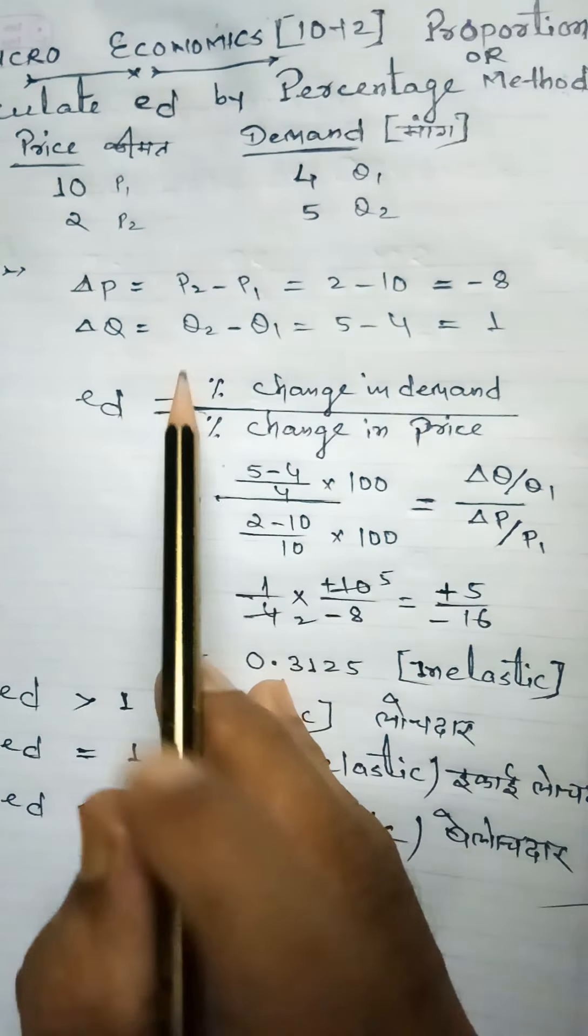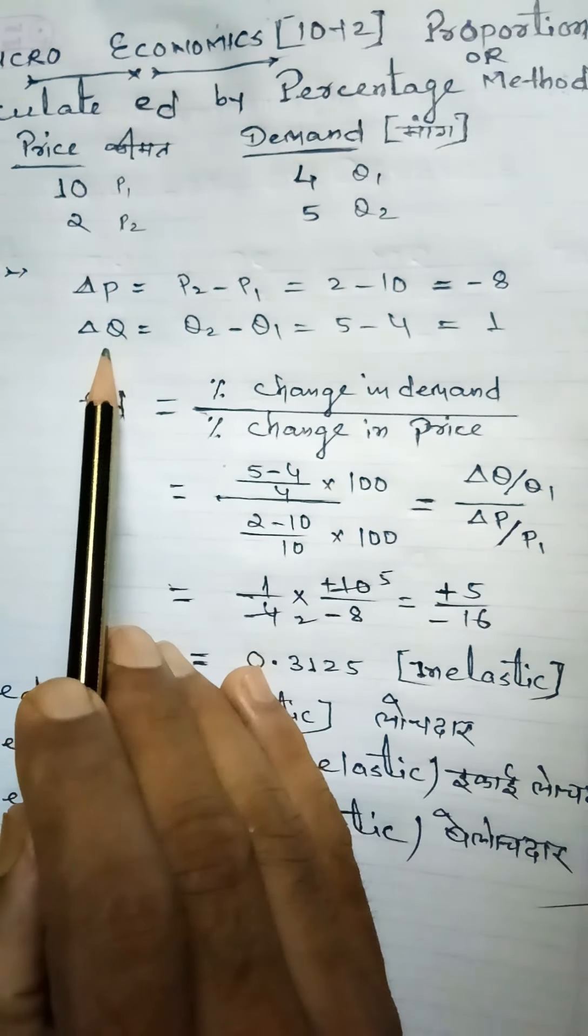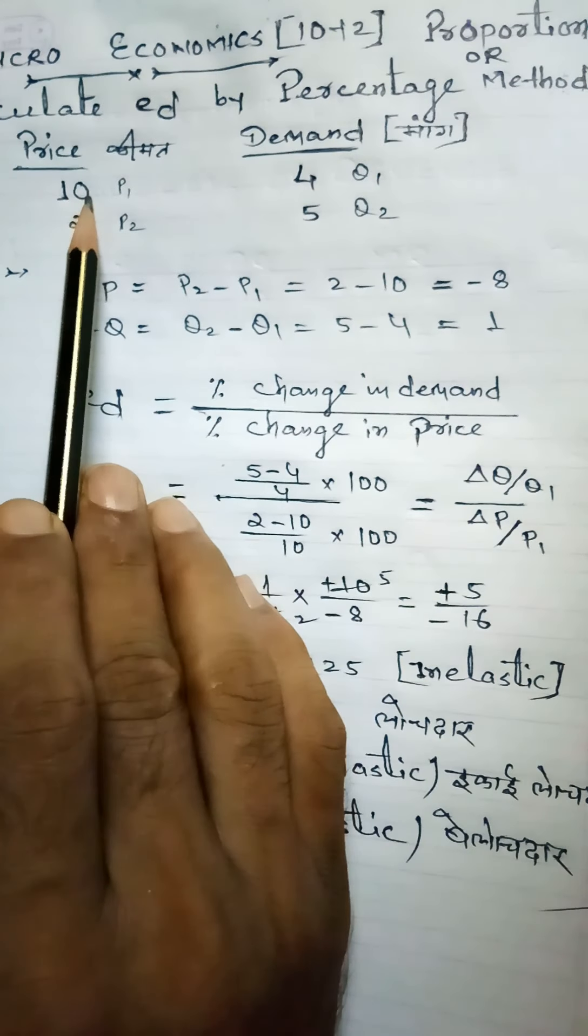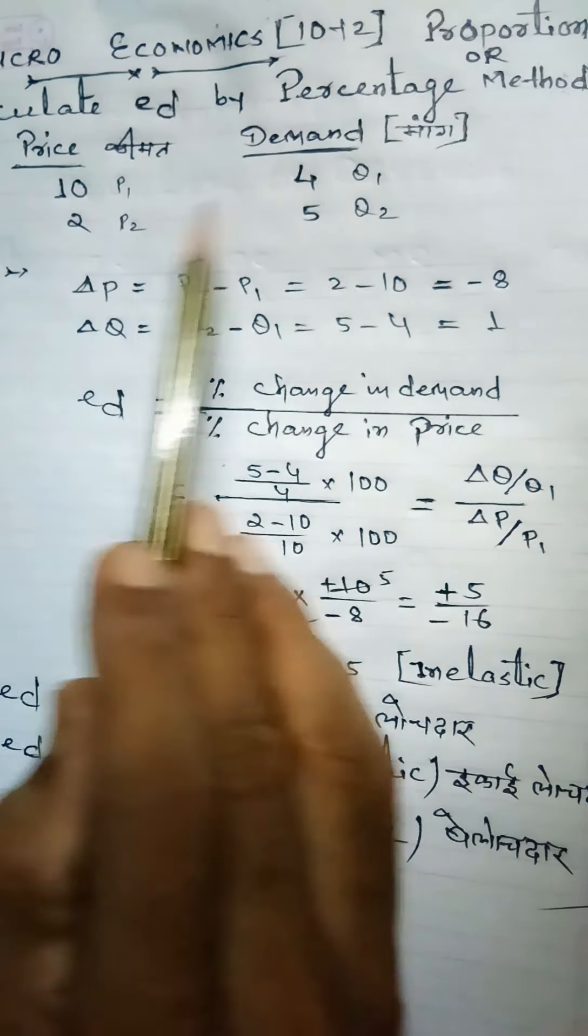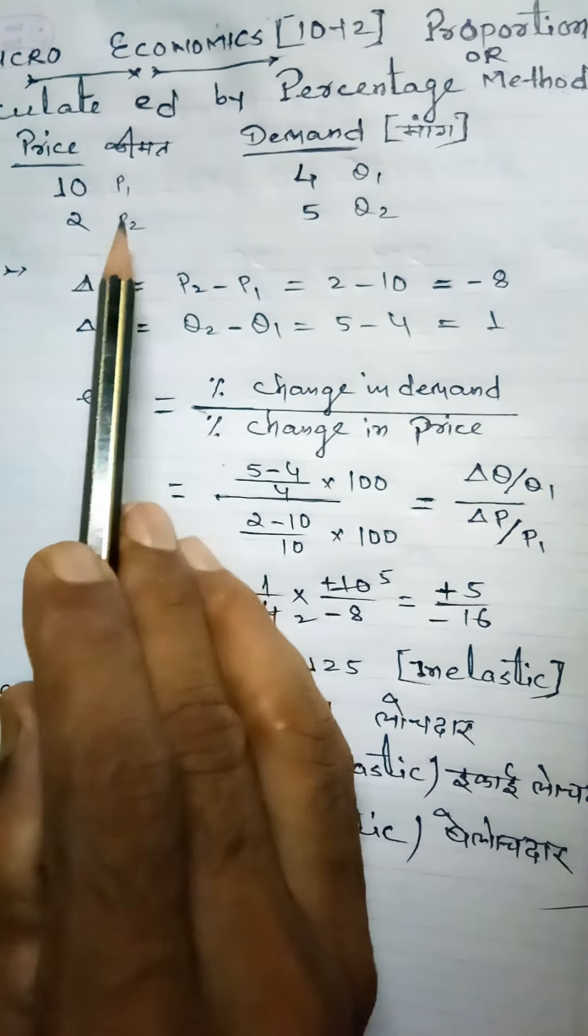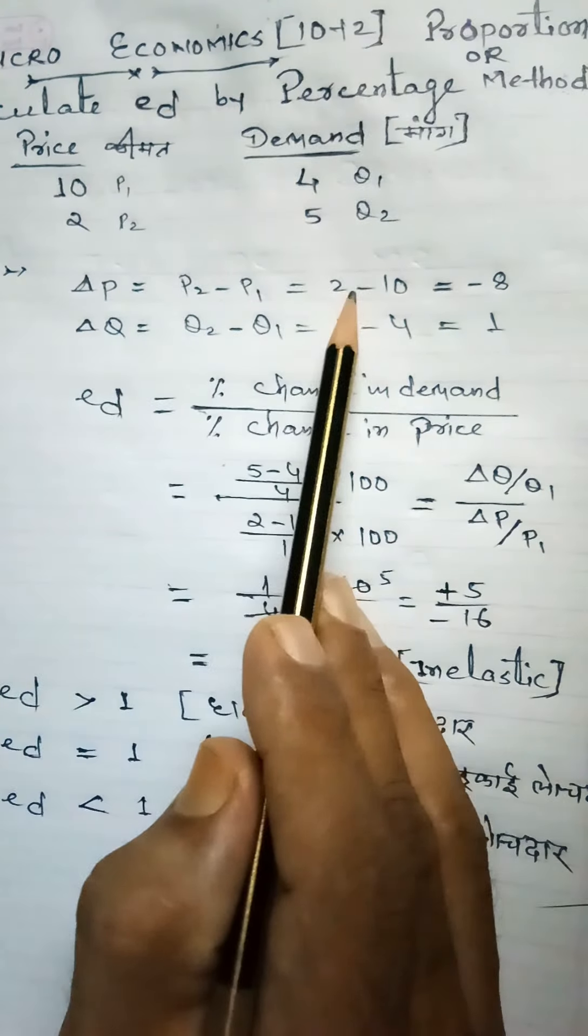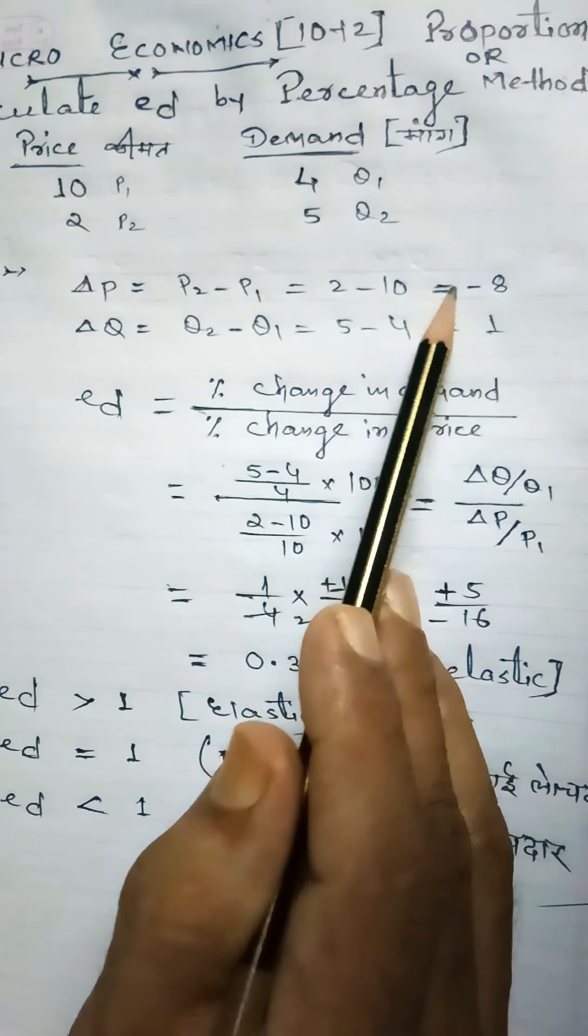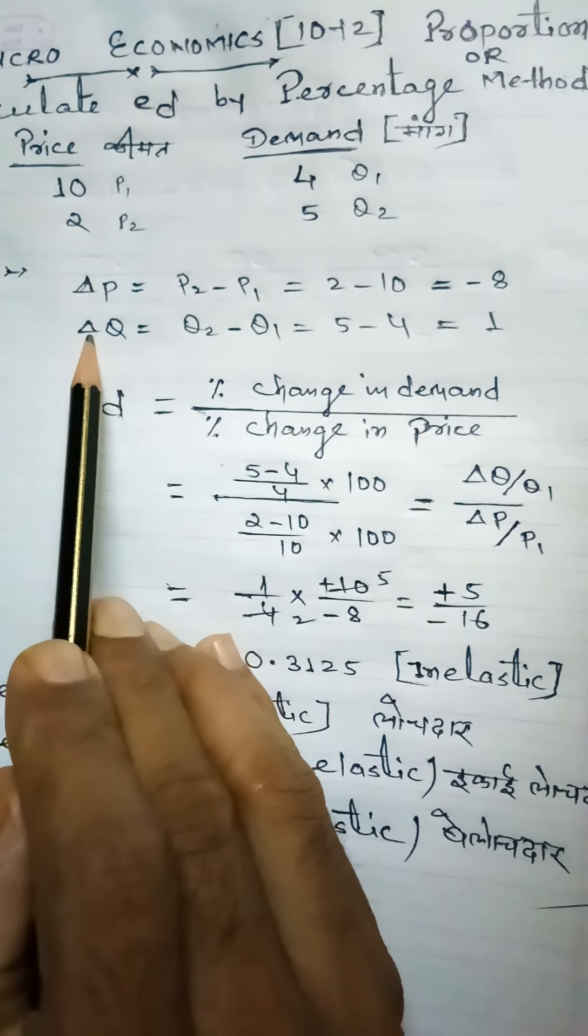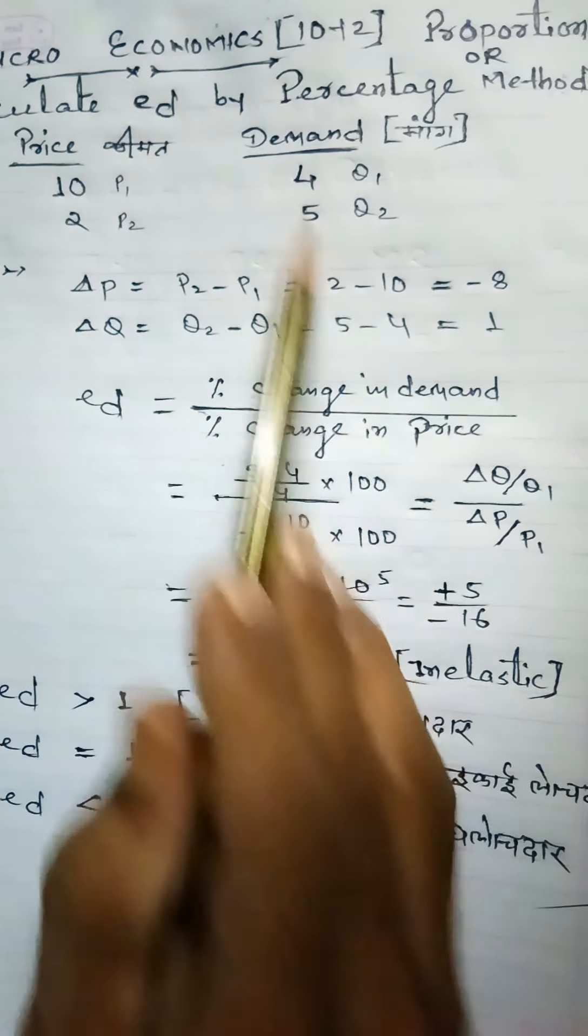The solution: first, you must find del-P and del-Q. Del means difference. Price is P1 and P2, demand is Q1 and Q2. So del-P equals P2 minus P1, which is 2 minus 10 equals minus 8. And del-Q equals Q2 minus Q1, which is 5 minus 4 equals 1.